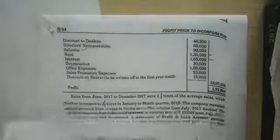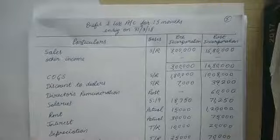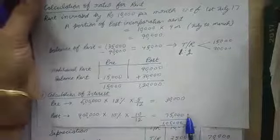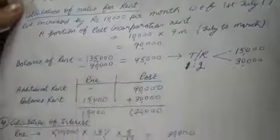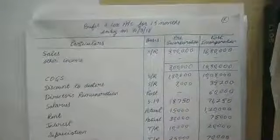Interest: pre-incorporation gets ₹30,000 and post-incorporation gets ₹75,000. These working notes — time ratio, sales ratio, salaries ratio, rent ratio, and interest ratio — are really very important for solving this type of question. If you are able to calculate all these ratios, solving the question becomes very easy.